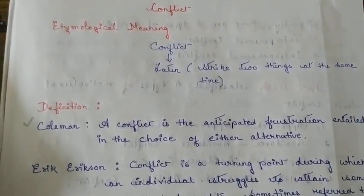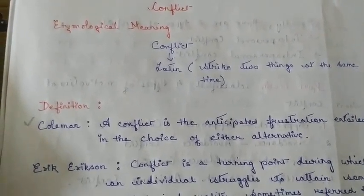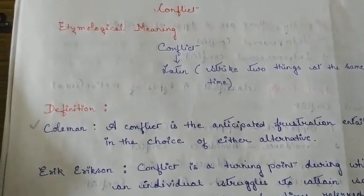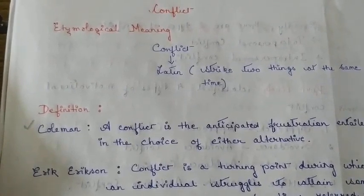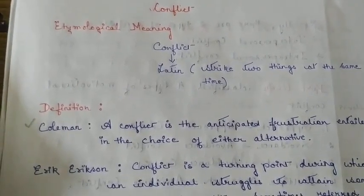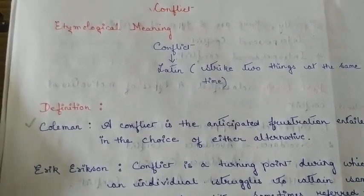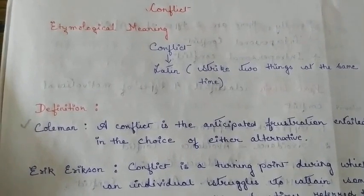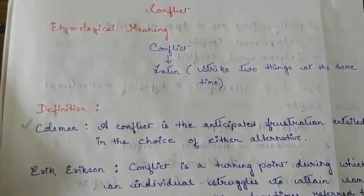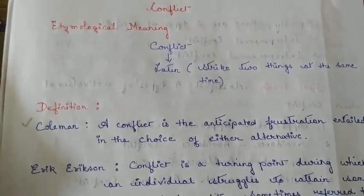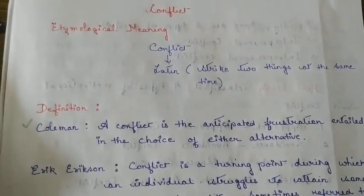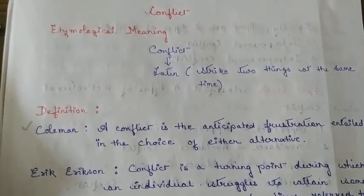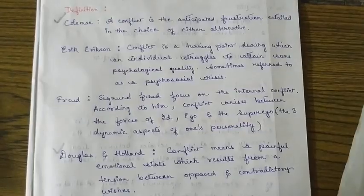Let me explain in very simple terms. Conflict is an emotional tension — or you can say emotional pressure or strain — which a person experiences when he has to choose between two goals that are equally desirable or equally undesirable.